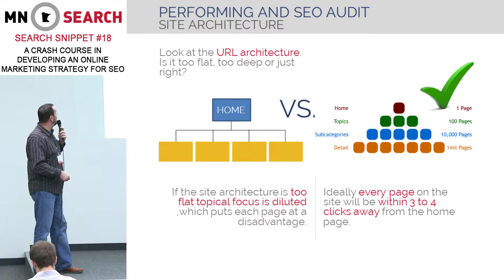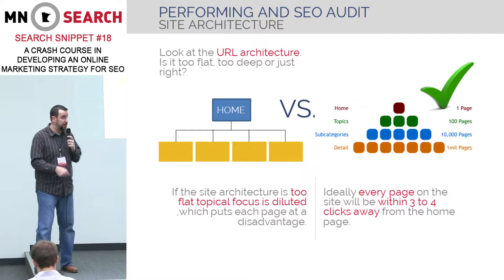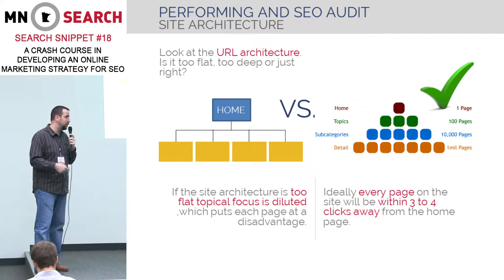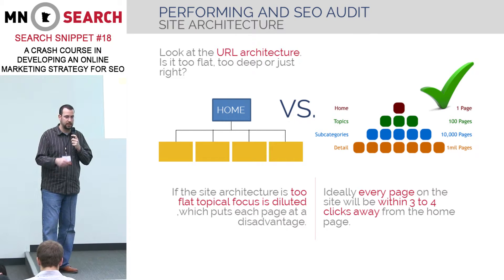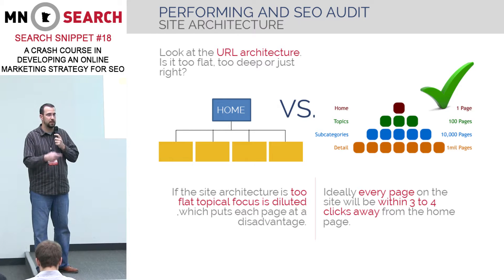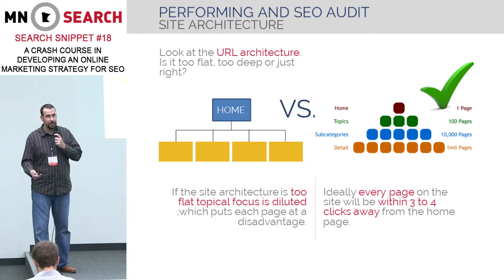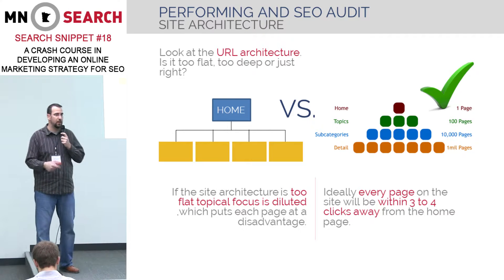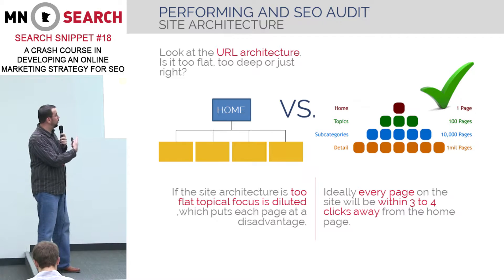Starting with site architecture — looking at the URL architecture: is it too flat, is it too deep, is it just right? We're looking at two different site architectures — one is flat, one is not. In general, if the site architecture is too flat, the topical focus gets diluted, and pages don't get the attention they need, making them harder to rank. Category pages at the same level as product pages means everything gets diluted. But with something more hierarchical, ideally every page is still within three or four clicks from the home page — findable, crawlable, and indexable. I would try to move toward that structure.